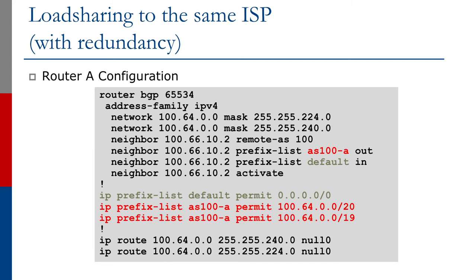Let's look at the configuration. On router A, we originate the slash 19 aggregate as before, and we also now originate the first slash 20. Looking at the prefix list, we're now allowing out the slash 19 aggregate as well as the slash 20. Inbound, it's the same as before — just the default route. On router B, we again originate the aggregate and also originate the second slash 20, which begins at 100.64.16.0/20. The prefix list contains the slash 19 and the slash 20, and that is what gets announced to the upstream provider.